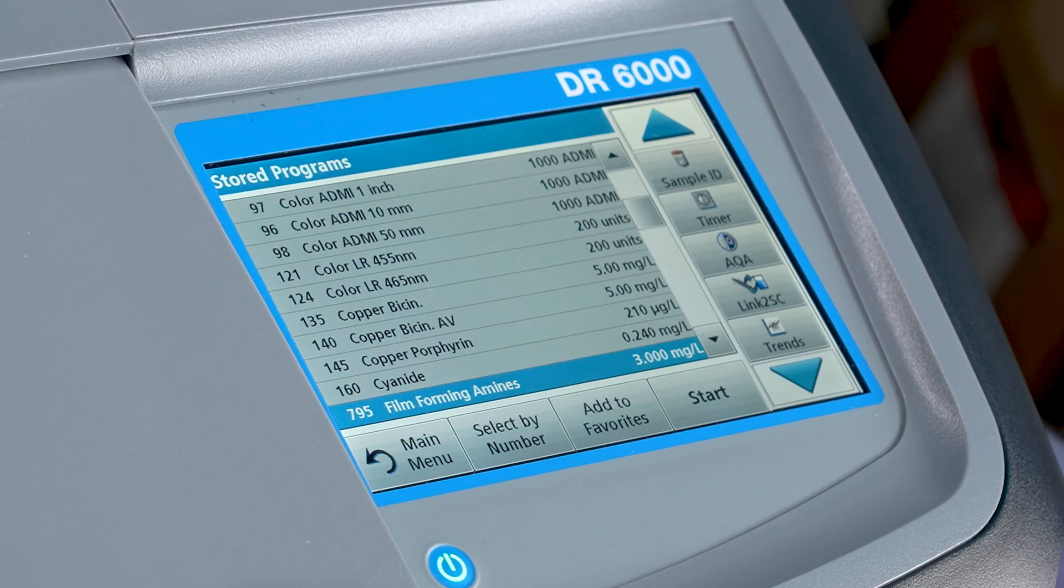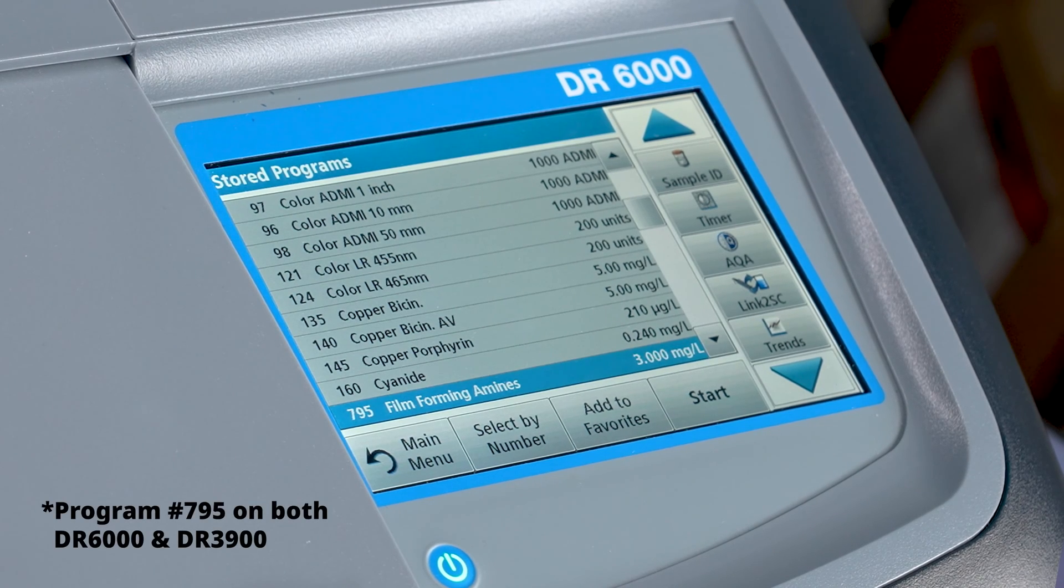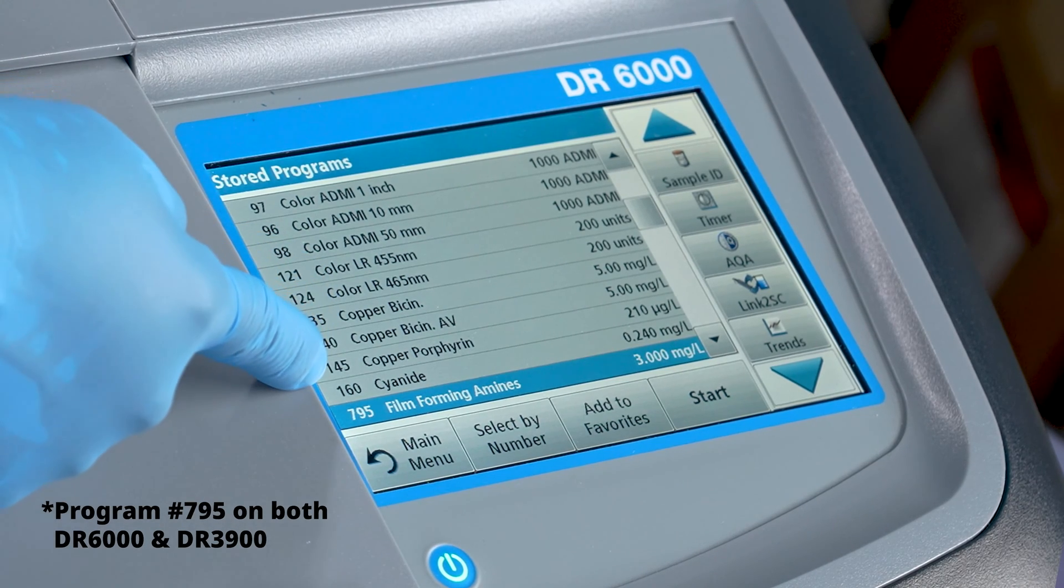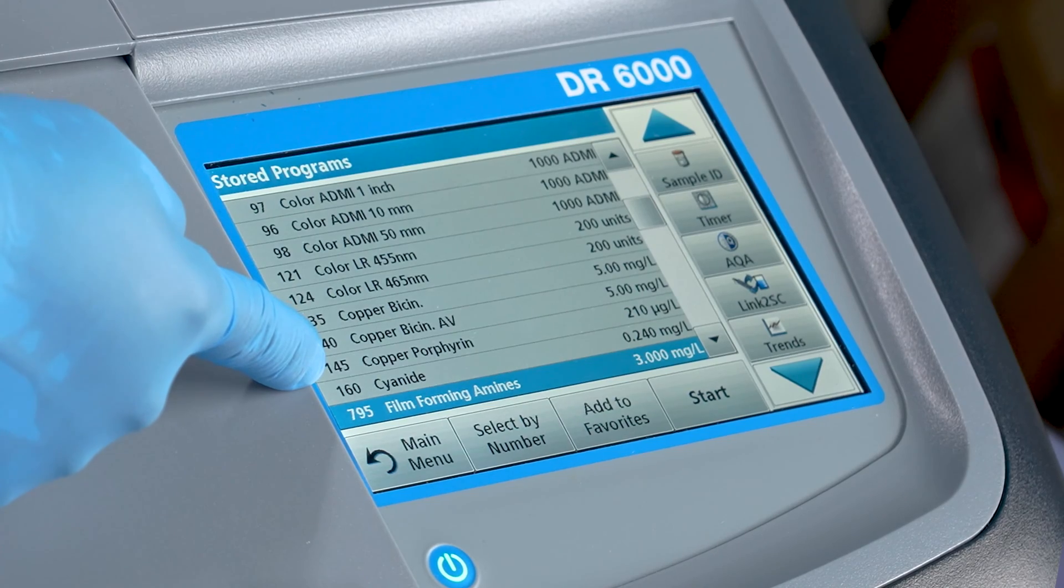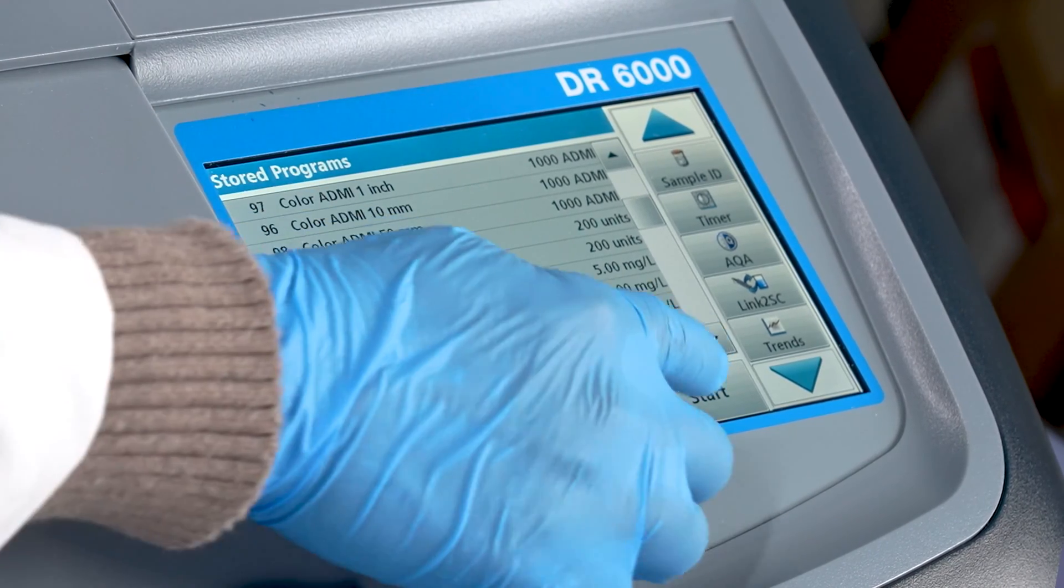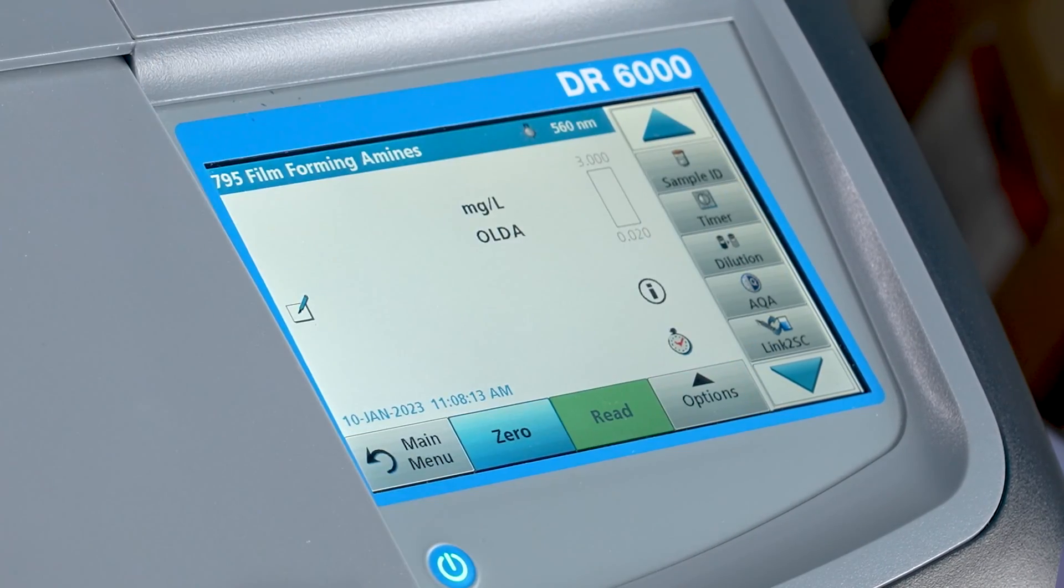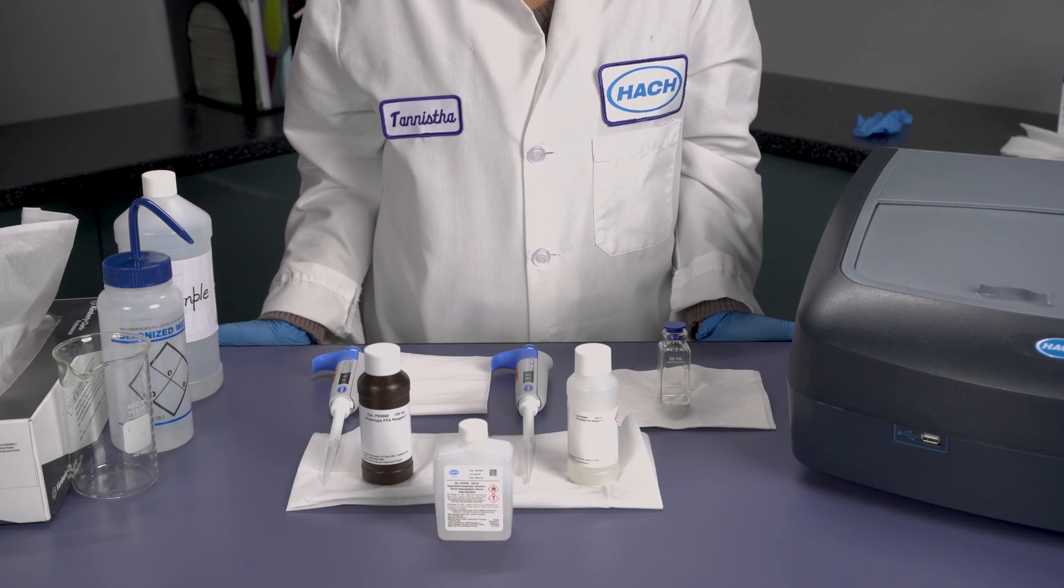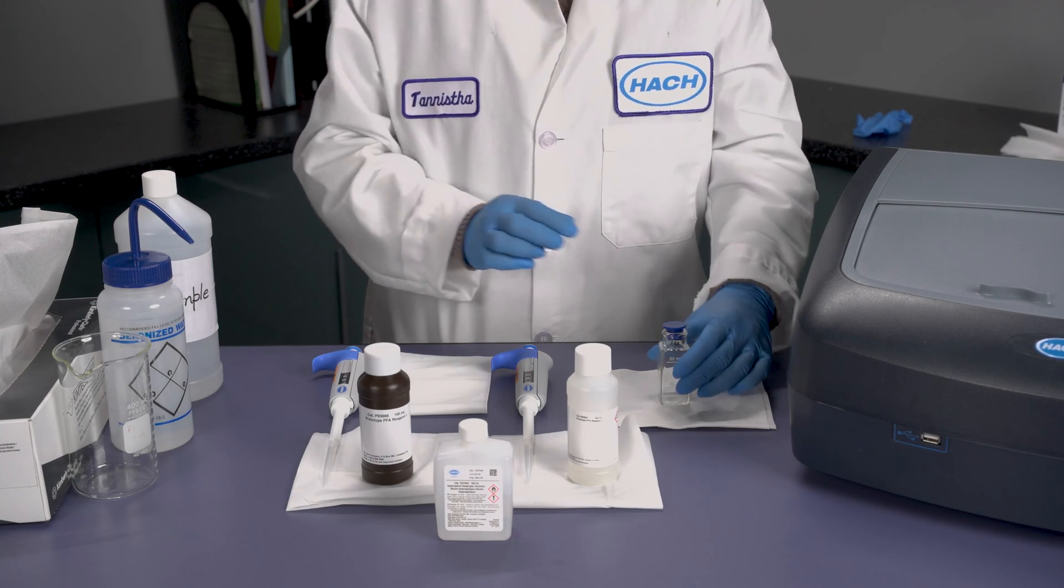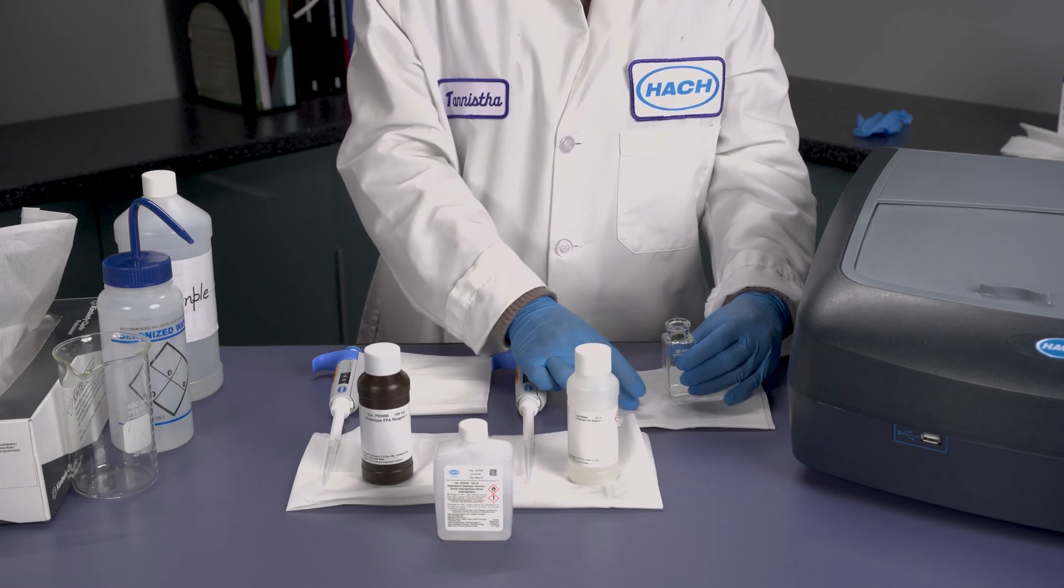To perform the method, first we need to select the proper program on our DR6000 spectrophotometer. This is program number 795.5. To perform the test, first we need to rinse out the 25 ml sample cell with deionized water.